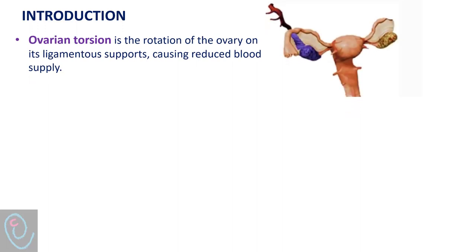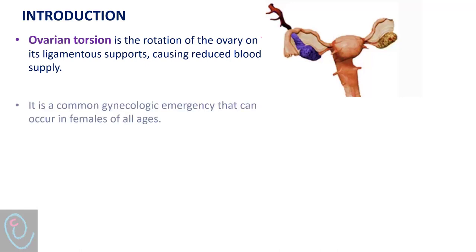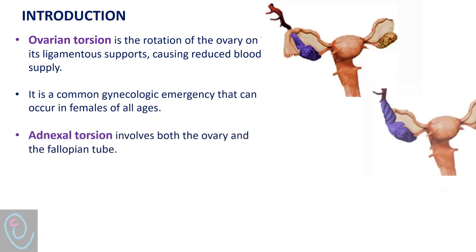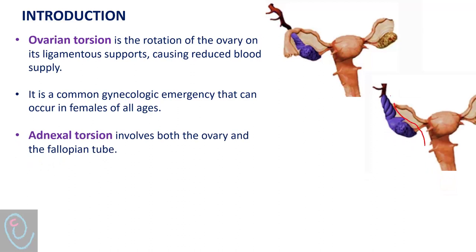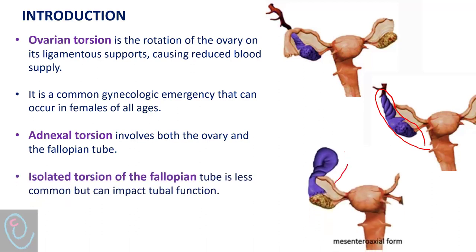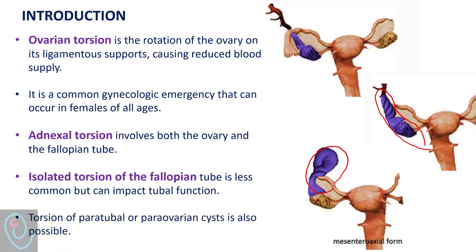Ovarian torsion is the rotation of the ovary on its ligamentous support, causing a reduction in blood supply. It is a common gynecologic emergency that can occur in females of all ages. Torsion of the ovary and fallopian tube is known as adnexal torsion. Isolated torsion of the fallopian tube is less common but can impact tubal function. Torsion of paratubal or para-ovarian cysts is also possible.